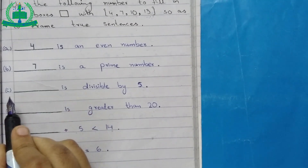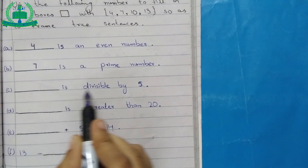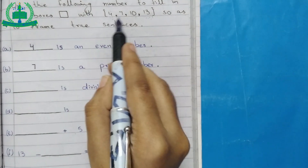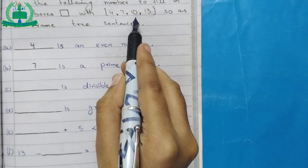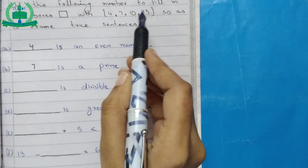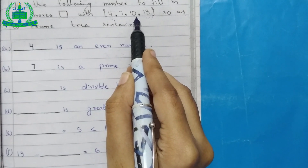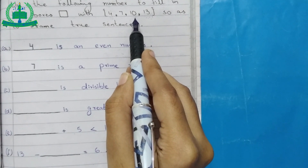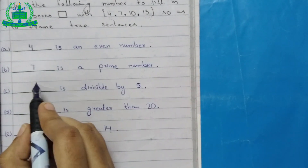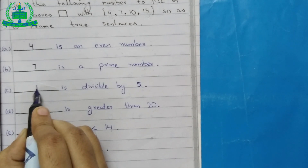C: A dash is divisible by 5. From the options 4, 7, 10, 13 — 10 is divisible by 5. So it is a true sentence. So we write 10.